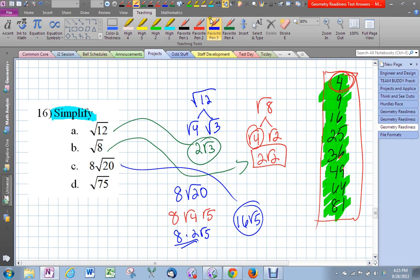Let's try the next one. It's radical 75. Radical 75, I'm thinking 25 times 3. Why that? Because 25 is on our list. So in order to simplify radicals, you really have to know your times tables really well. And so this is 5 radical 3, and that is the simplified version of the square root of 75.